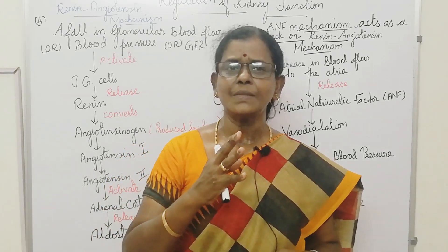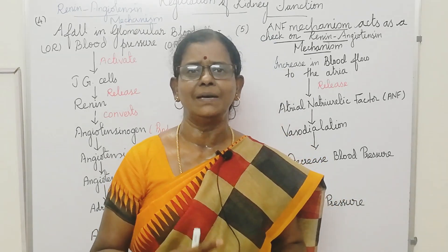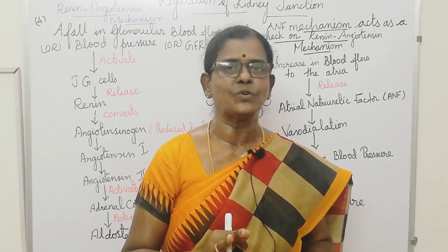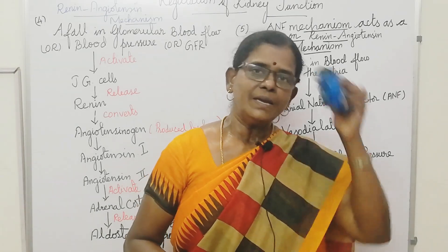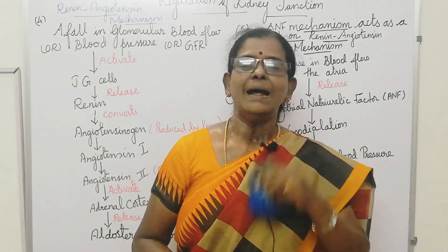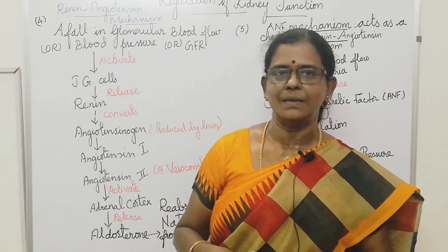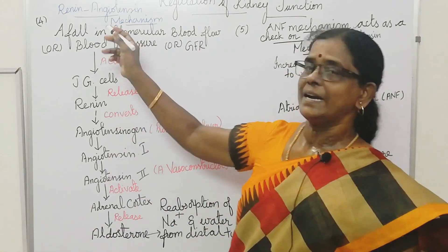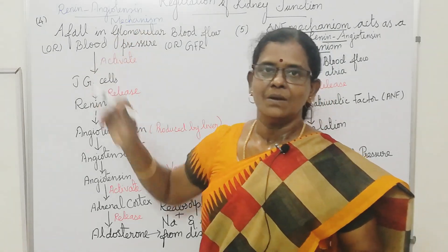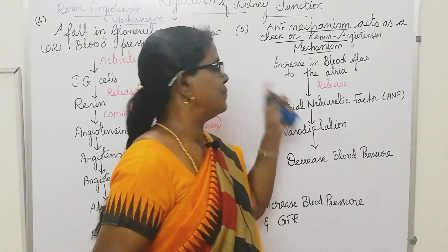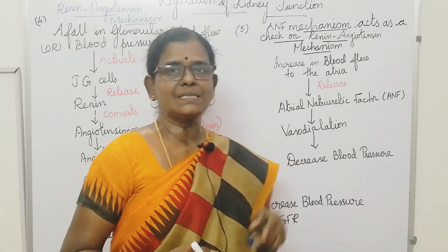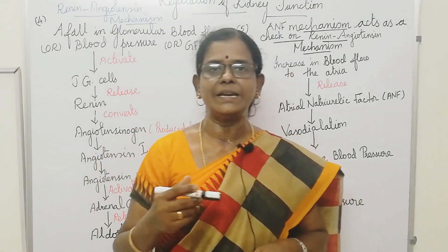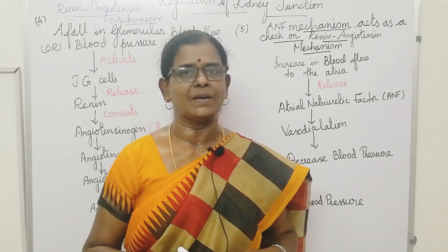There is a mechanism for kidney function regulation. In this video, I explained the same 2 flowcharts — one is the renin-angiotensin mechanism, and the other is the ANF mechanism. ANF mechanism acts as a check, and the renin-angiotensin mechanism is a checkpoint of the overall mechanism.